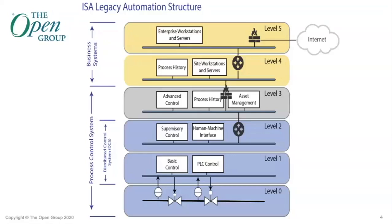We refer to this architecture as the Purdue Reference Model. It goes back to design principles that were established in the late 1970s and the early 1980s. Although we've gotten a lot of benefits from this system and this architecture over the decades, there are limitations, and it's now time — that's the work of the OPA Forum — to implement a change to the system. The current state of the art involves proprietary solutions to computing and communications needs, particularly in levels one and two on this chart.